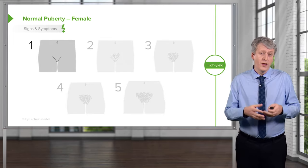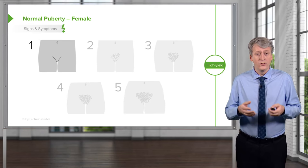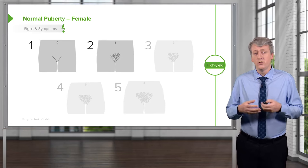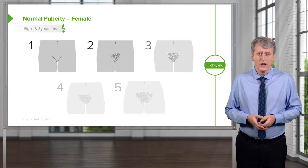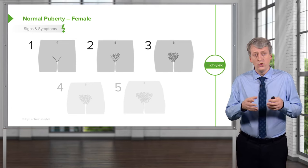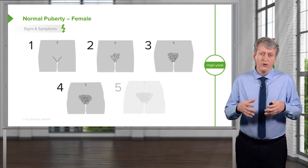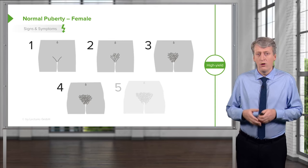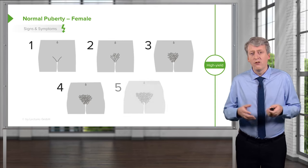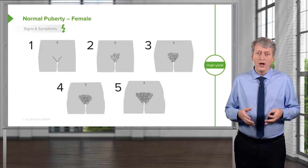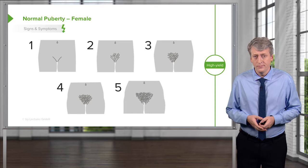Girls progress in a similar manner. Tanner 1 is no pubic hair. Tanner 2 is scant pubic hair. Tanner 3 is too many to count. Tanner 4 is a full amount of pubic hair around the genitalia. Tanner 5 is pubic hair extending down the thighs or up the ramus.